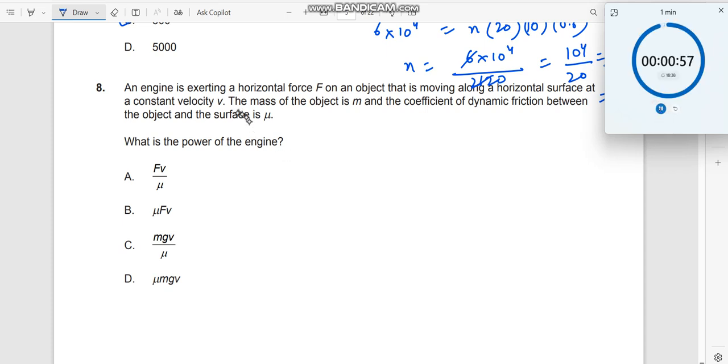Question number 8. An engine is exerting a horizontal force F on an object. You have an object, you have a force F, moving on a horizontal surface at a constant velocity. There is no acceleration, right?